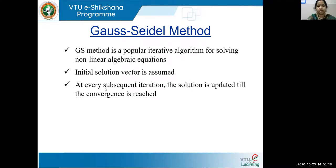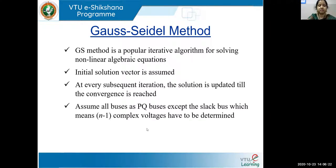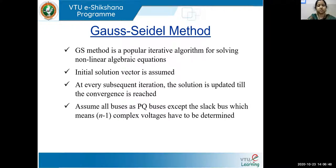If you consider a system consisting only of PQ buses — remembering that we have basically two types of buses, PV and PQ buses, plus the slack bus — then if the network consists only of PQ buses, obviously a slack bus is also required. In that case, you will have N minus one complex voltage equations, because the slack bus voltage magnitude and angle are already known. So you need to calculate the complex bus voltages for all the other buses.